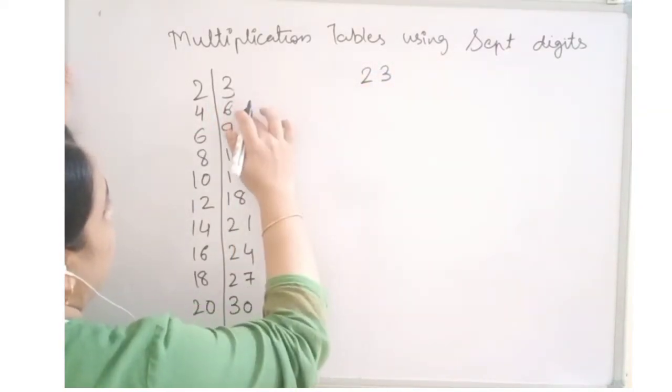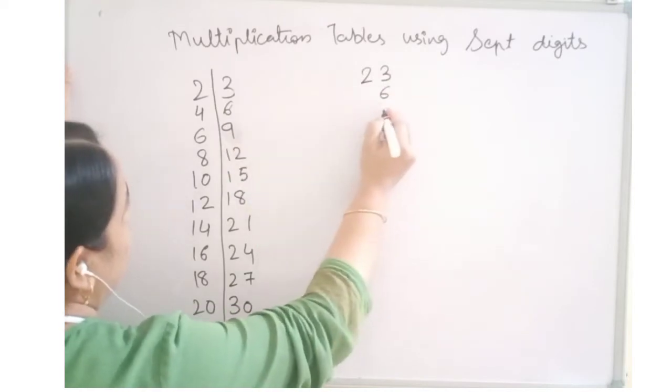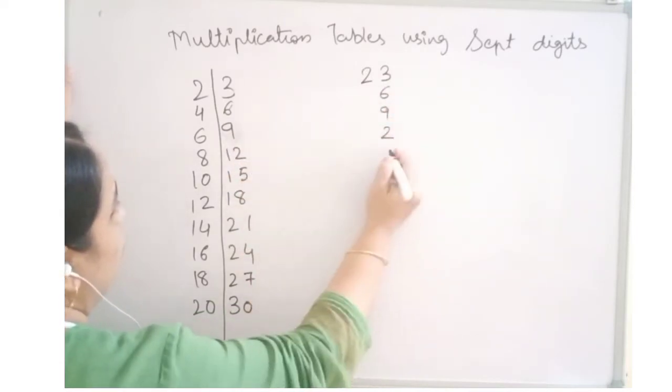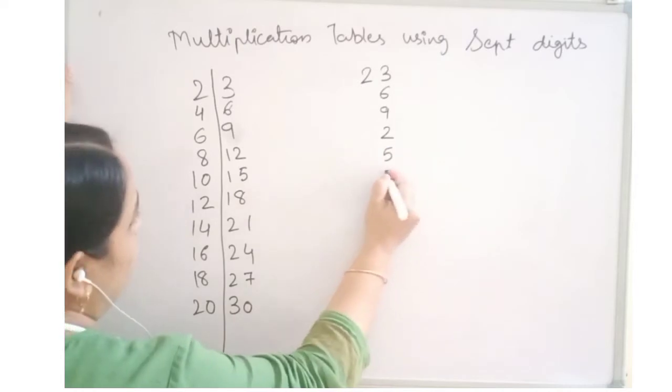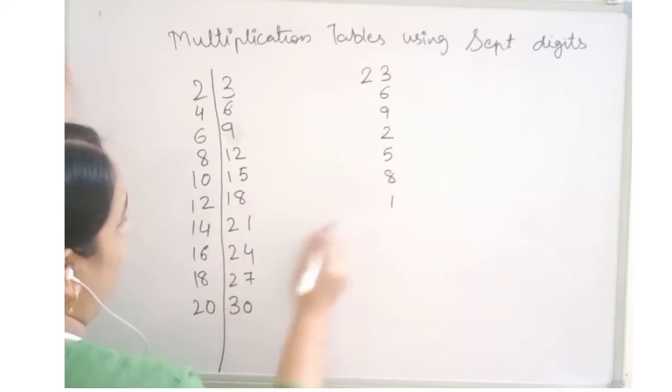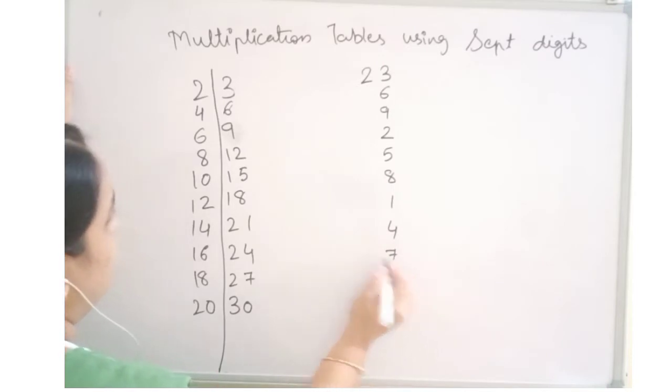So 23, this will be 6, 9, 2, 5, 8, 1, 4, 7 and 0.